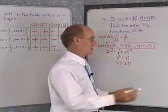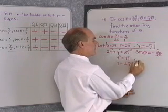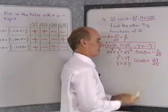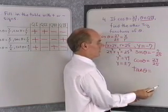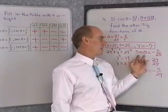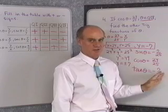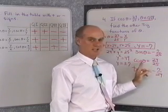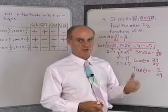Now let's find the six trig functions: sine θ = y/r = -7/25. Cosine θ = x/r = 24/25 — which was given. Tangent θ = y/x = -7/24. Then cosecant θ = -25/7, secant θ = 25/24, and cotangent θ = -24/7, since those are the reciprocals of sine, cosine, and tangent respectively.